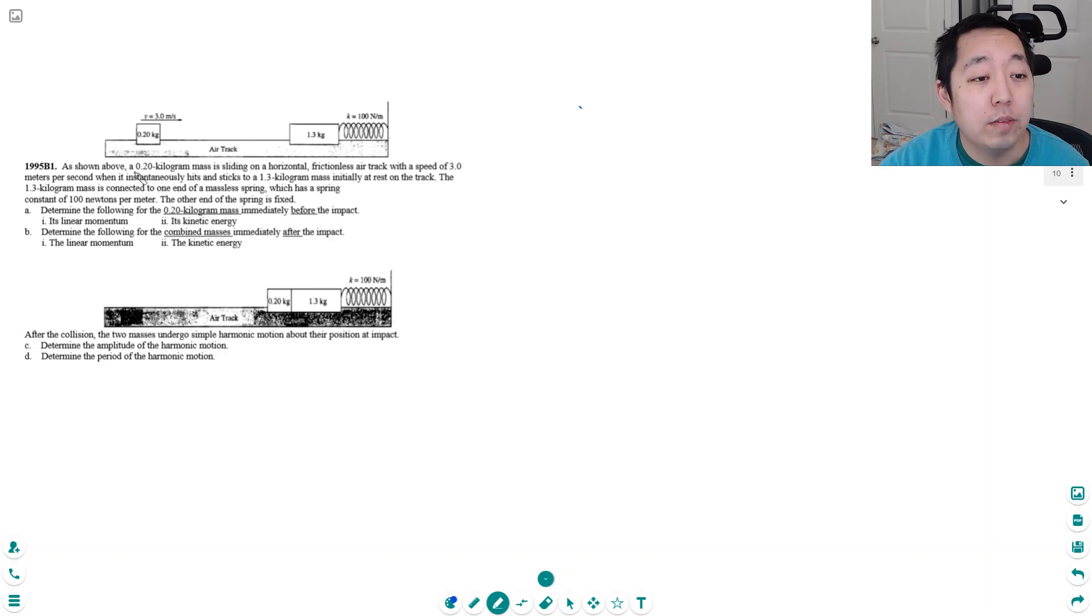So we see shown above a 0.2 kilogram mass is sliding on a horizontal frictionless air track with a speed of 3 meters per second when it instantly hits and sticks to a 1.3 kilogram mass initially at rest on the track. The 1.3 kilogram mass is connected to one end of a massless spring which has a spring constant of 100 newtons per meter. The other end of the spring is fixed.